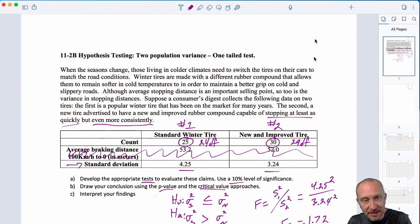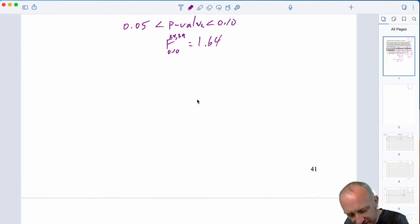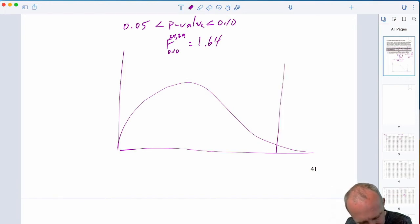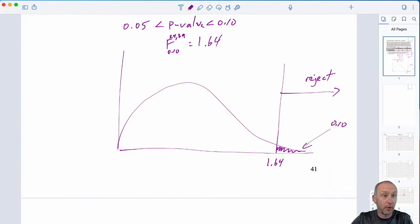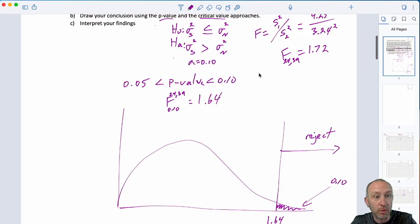Good. So, that gives us now our rejection region. Right? So, now I can see I've got this f-distribution, some asymmetric distribution here. I've got a critical value of 1.64. That defines that rejection region. Here I have that area in the upper tail equal to 0.1.